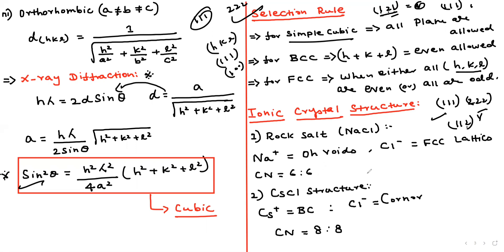Now the ionic crystal structures. For NaCl: Na⁺ and Cl⁻ are both in an FCC arrangement, coordination number 6:6, meaning each Na⁺ is surrounded by 6 Cl⁻ and each Cl⁻ is surrounded by 6 Na⁺. For CsCl: Cs⁺ is at the body center, Cl⁻ at corners; coordination number is 8:8, meaning each Cs⁺ ion is surrounded by 8 Cl⁻ ions.